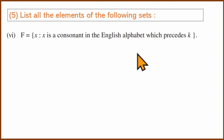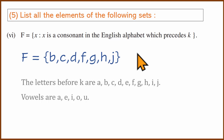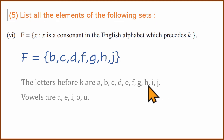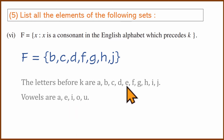X is a consonant in the English alphabet which precedes K. The letters before K are A, B, C, D, E, F, G, H, I, J. Vowels are A, E, I, O, U — so we remove vowels A, E, I. The consonants preceding K are B, C, D, F, G, H, J.